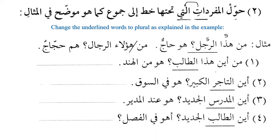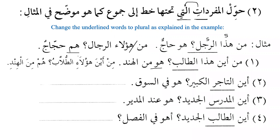'Where is this student from? He is from India.' Now we want to say: 'Where are these students from?' The pronoun هو changes to هم, and طالب changes to طلاب because subject and predicate must agree in number. Answer: هم من الهند — they are from India.